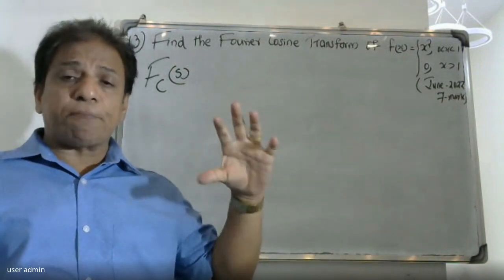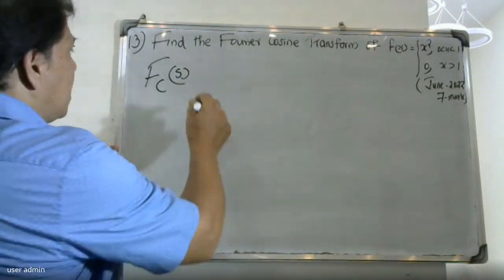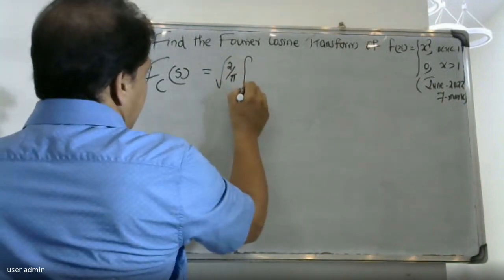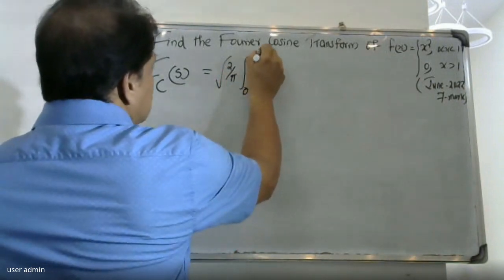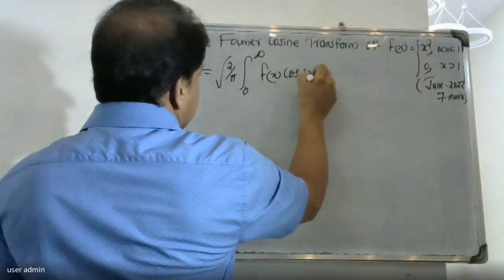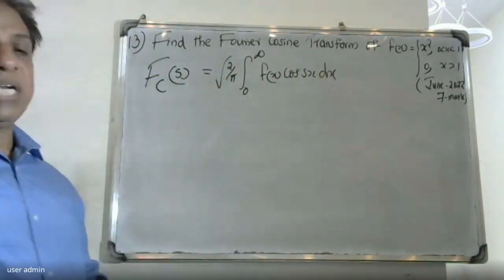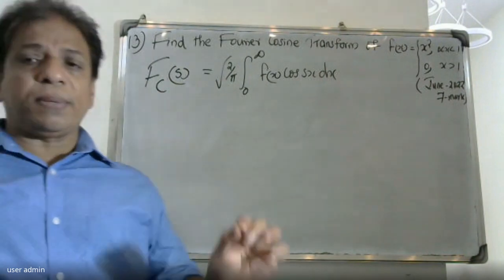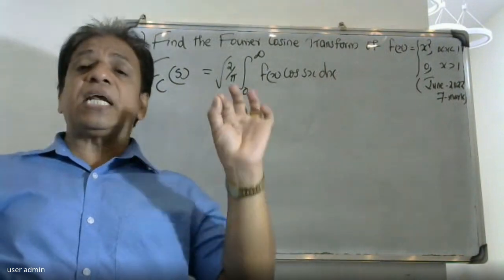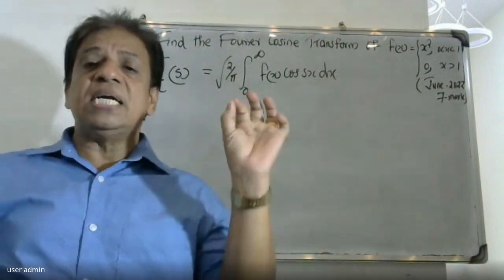The Fourier cosine transform formula is represented as F_cs, and the formula is: root of 2 by pi, integral from 0 to infinity of f(x) cos(sx) dx.